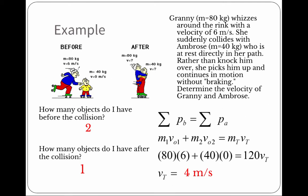Another example of an inelastic, notice if you look at it, you've got to identify what kind of collision you have. If you have two objects before and one object after, that would be an inelastic collision. Granny is 80 kilograms, whizzes around the rink with a velocity of 6 meters per second. She suddenly collides with Ambrose, who is 40 kilograms...